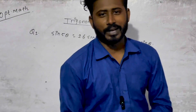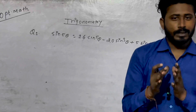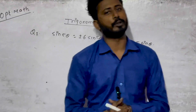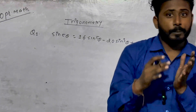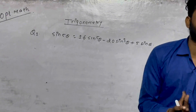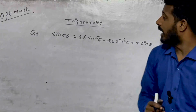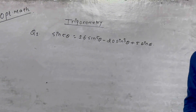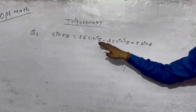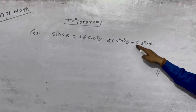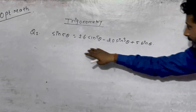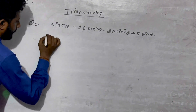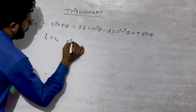Hello everyone, welcome to our YouTube channel Super Mathematics Area. We are going to take trigonometry. We are going to make a simple trick. sin(5θ) equals 16sin⁵θ minus 20sin³θ plus 5sinθ. We are going to derive the formula for sin(5θ).